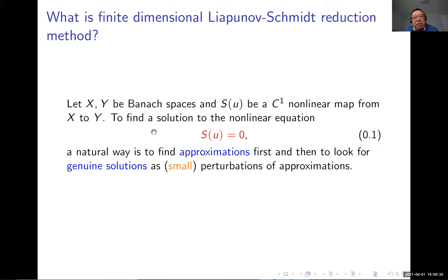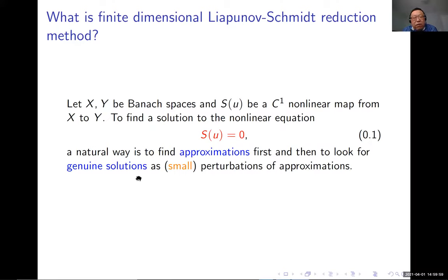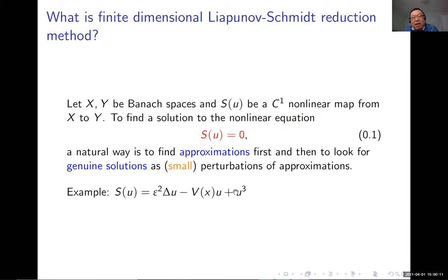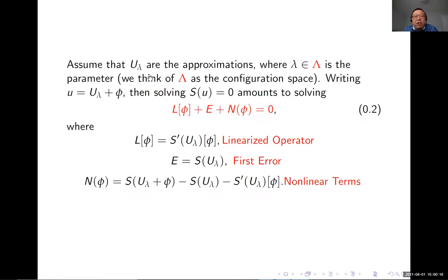What is the finite dimensional reduction method? The idea is very simple — it grew out of the super bifurcation theory. Suppose you want to solve a nonlinear equation S(u) = 0. This is a C¹ map from X to Y, some Banach spaces. A natural way is to first find an approximate solution and then look for true solutions as a small perturbation of that approximation. The approximate solution may depend on some parameter.